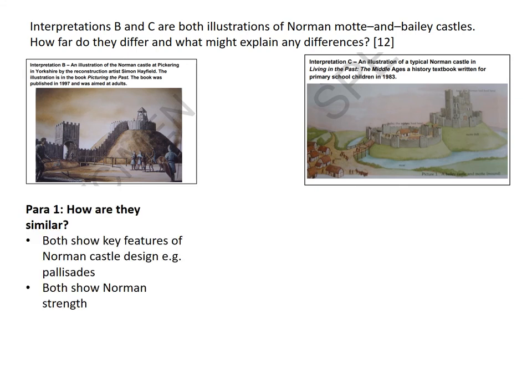Let's look at paragraph one — how are they similar? Both of these images are really similar because they both show the key features of a Norman castle. For example, I can see palisades — the fence that sits around the castle — very clearly in both. In both I can see a Norman tower on top of the motte, and I can see a motte clearly in both. They both show the strength of these Norman castles and how imposing they must have been on an English countryside, and you could see from both images how terrifying these must have been.